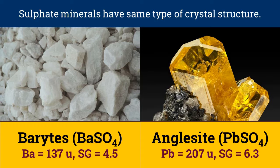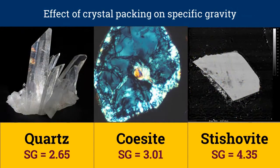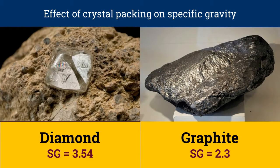It makes sense that a heavier constituent element increases the specific gravity of a mineral. Similarly, the closer the constituent molecules are packed, the more molecules fit in the same volume, causing specific gravity to rise. Quartz has a specific gravity of 2.65, but variants like coesite and stishovite, formed under extreme high temperature and pressure during meteorite impact, have higher specific gravity. Another example is diamond versus graphite — diamond with close packing has a higher specific gravity than graphite.